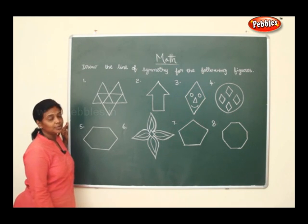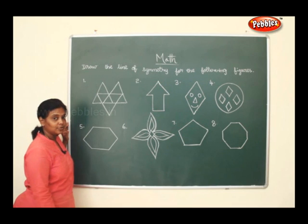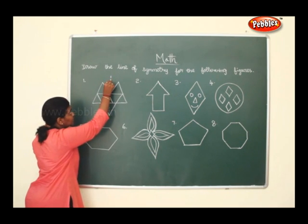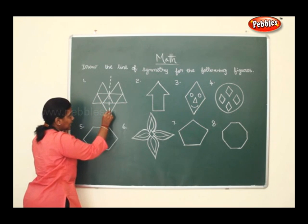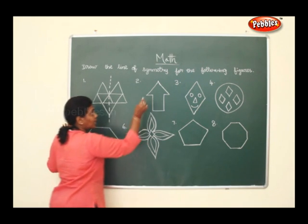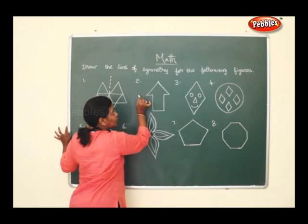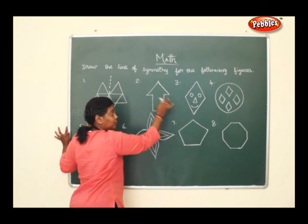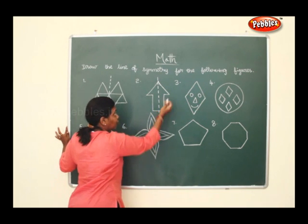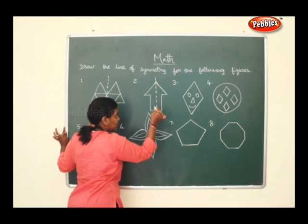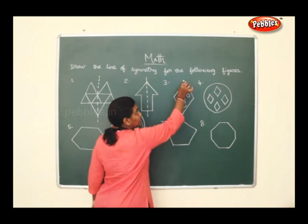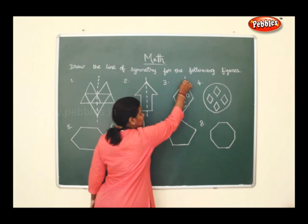Now let us draw the line of symmetry for the following figures. The symmetrical line should divide the figure exactly equally, and it is represented in a dotted line. If I cut it down, it will be exactly equal — imagine folding it and you get two equal halves. I cannot divide it in a way where one part is smaller and the other bigger; if I cut it like this, I get exactly two equal halves.